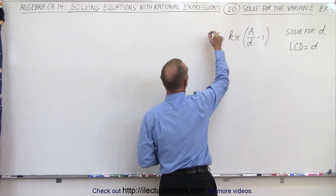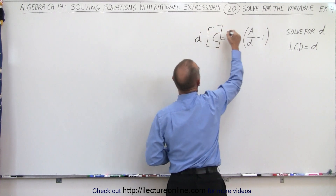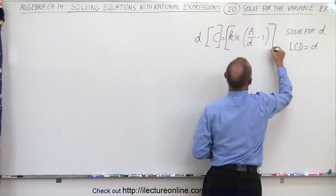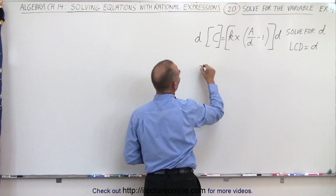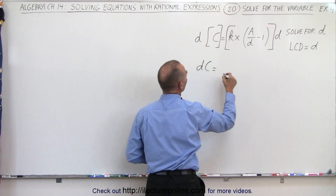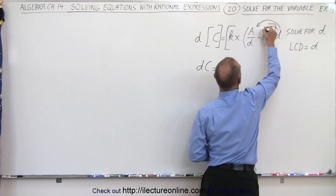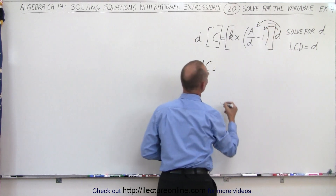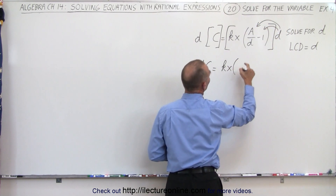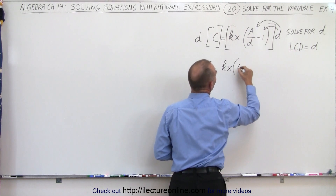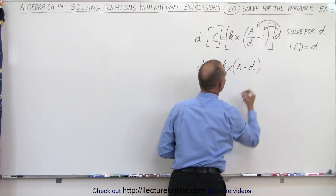So we're going to multiply the left side by D, and we're going to multiply the right side by D. On the left side, this becomes D times C is equal to, and on the right side, we have to multiply the D by both of these terms. So we have KX times, and we get A minus 1 times D, which is D.